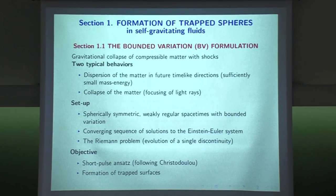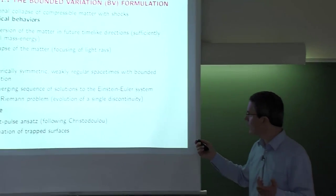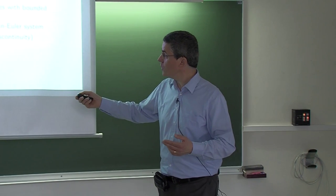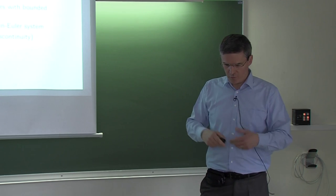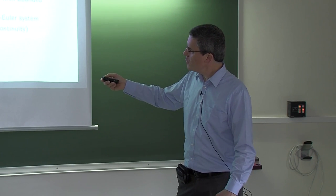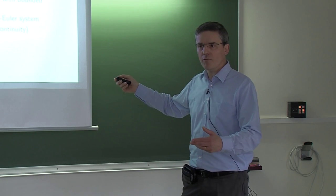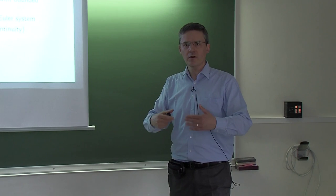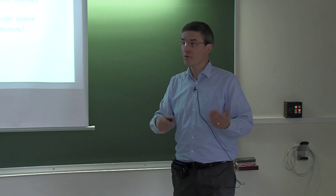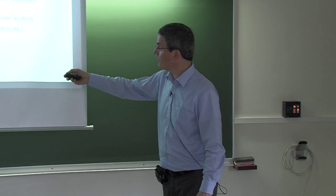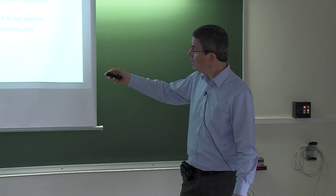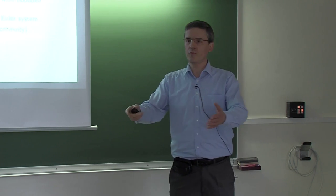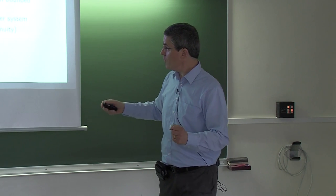In the previous chapter we constructed a sequence of solutions to the Einstein-Euler system in this situation by solving the Riemann problem, which was one important ingredient in the construction. The Riemann problem was used to understand how a single discontinuity would evolve. Because discontinuities will occur, we analyze the evolution of a single discontinuity. Based on that, we were able to construct a sequence of approximate solutions to the Einstein-Euler system and show its convergence to a Cauchy development.